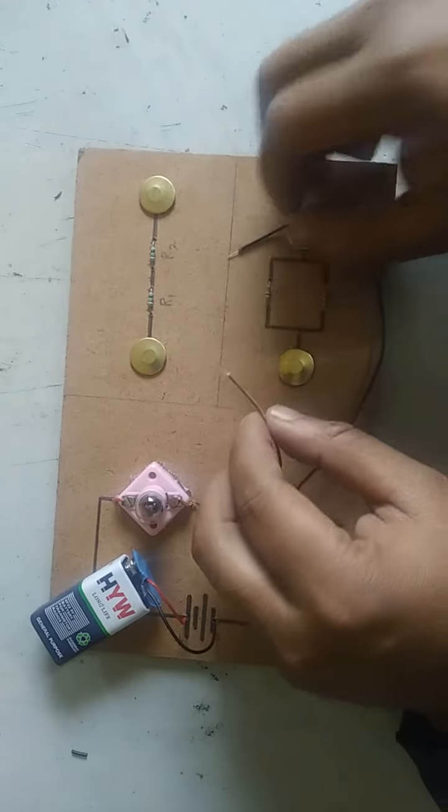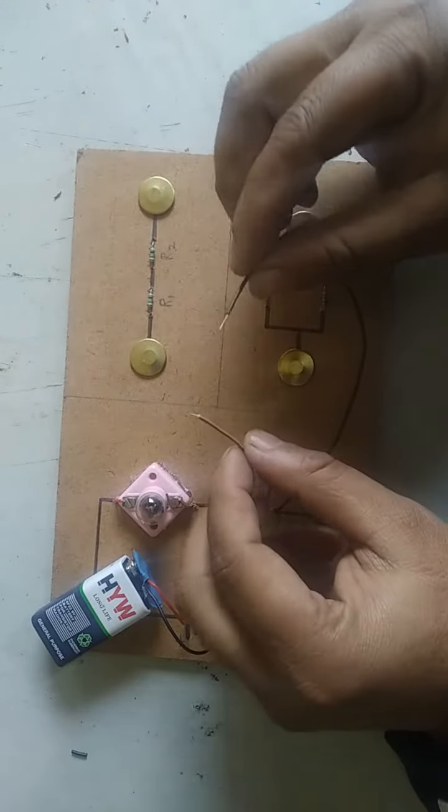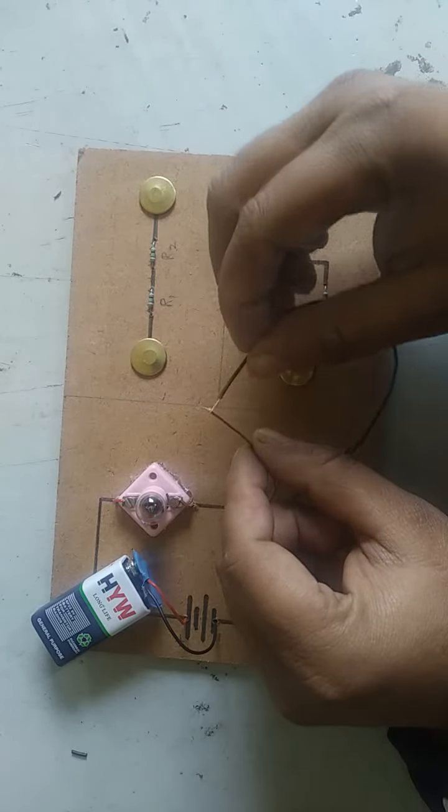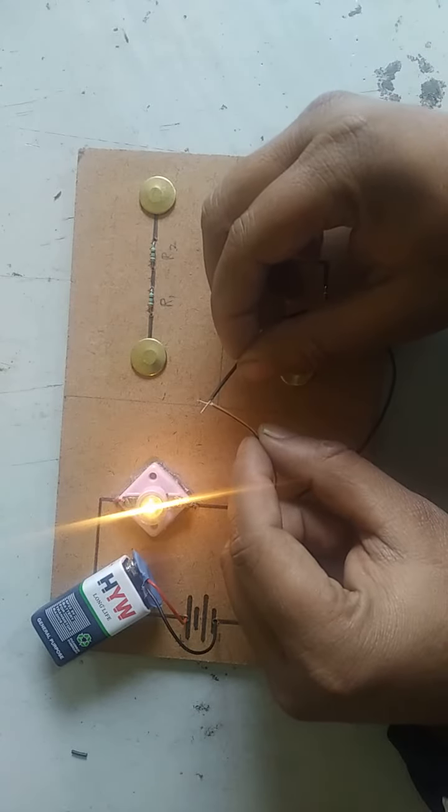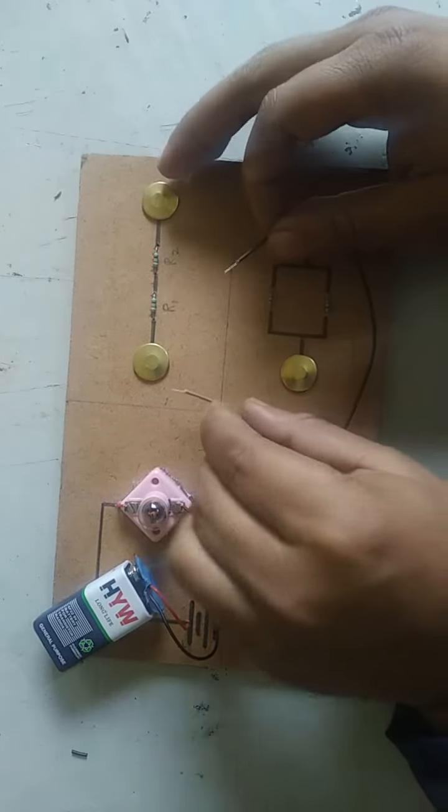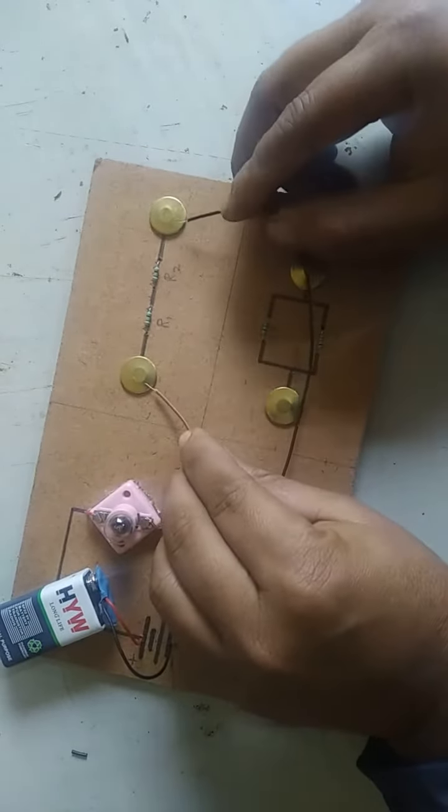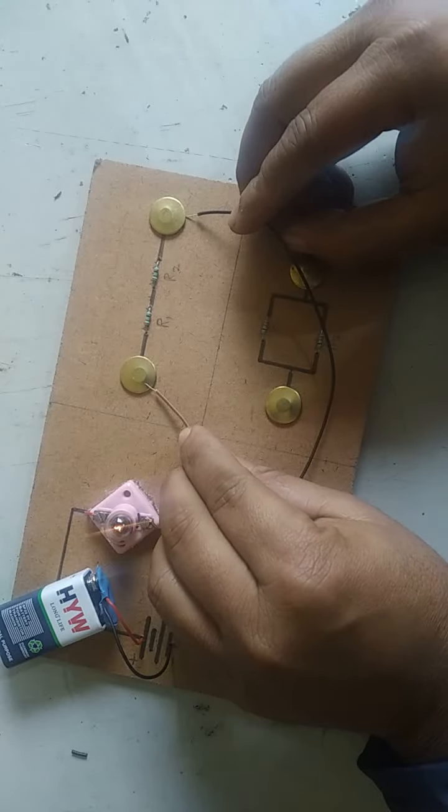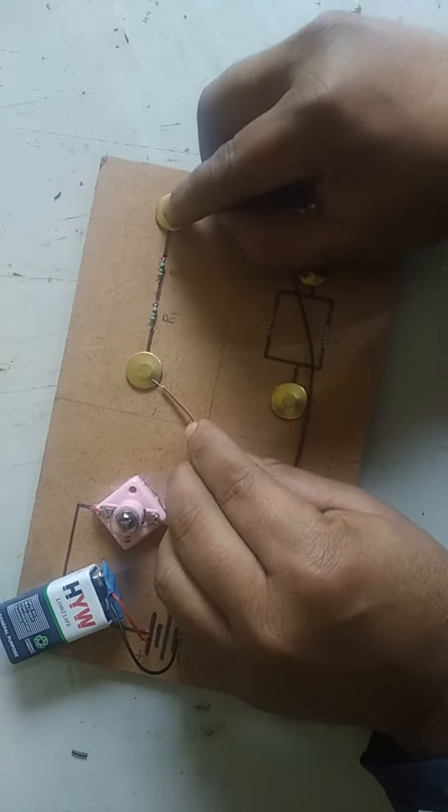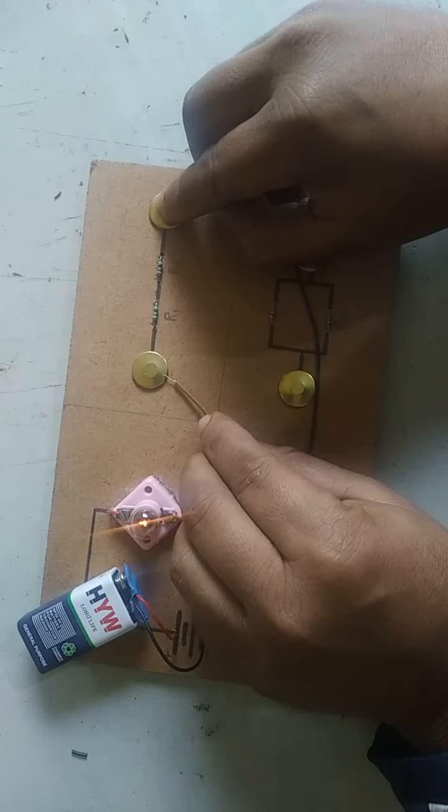Between these two terminals, we will introduce the resistance. Here is the normal brightness of the bulb. Now, when we introduce 40 ohms, you can see the brightness of the bulb. Here the bulb is very less bright.